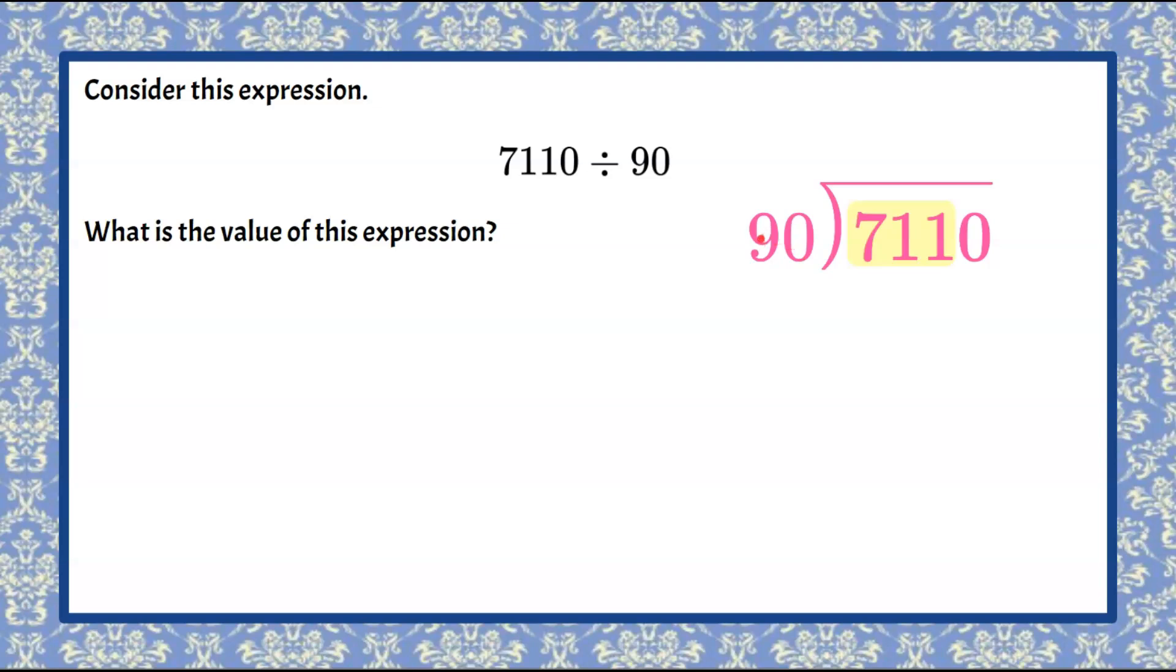If we do, let's say, nine times five would be 45. Add the zero: 450. We need to go higher. Let's try seven. Nine times seven is 63. Add the zero: 630.